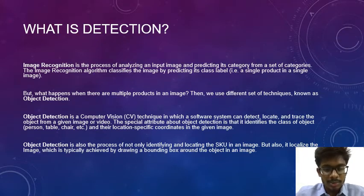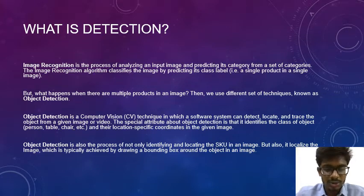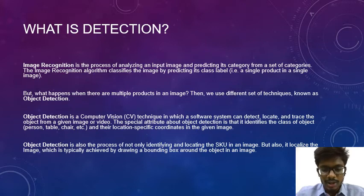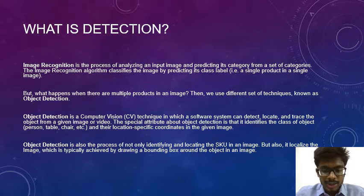Object detection is a computer vision technique commonly known as OpenCV, in which a system can detect, locate, and trace the object from a given image or video. The special attribute about object detection is that it identifies the class of object and their location-specific coordinates in the given image. Object detection is also the process of not only identifying and locating the SKU in an image, but also localizing the image, which is typically achieved by drawing a bounding box around the object.